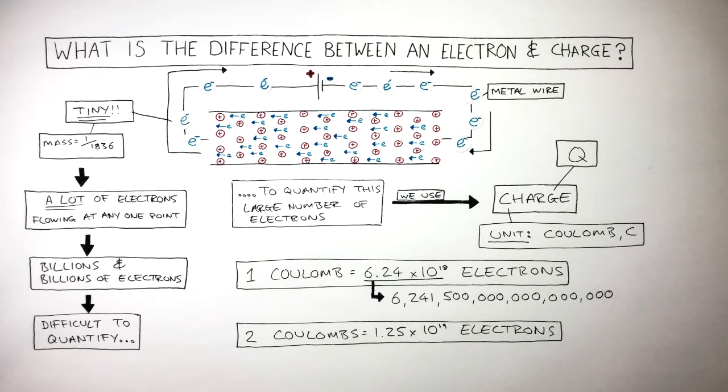Whereas charge is what we use to describe a very large number of electrons. The unit of charge is a coulomb. So when we say current is the flow of charge, what we're really saying is current is the flow of a very large number of electrons.